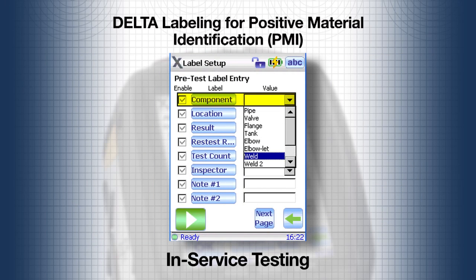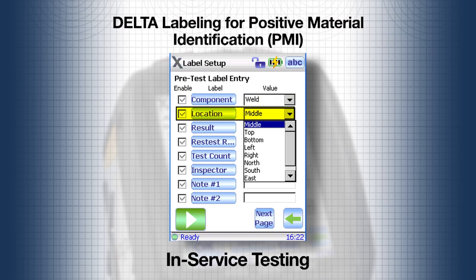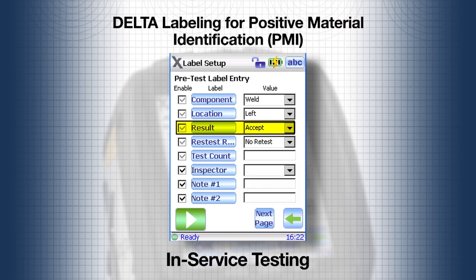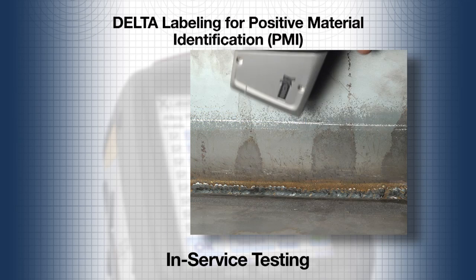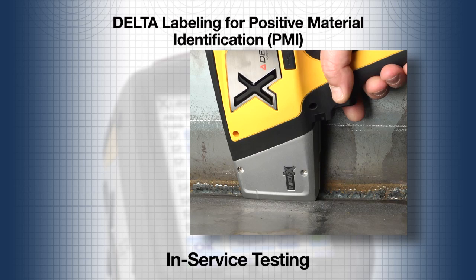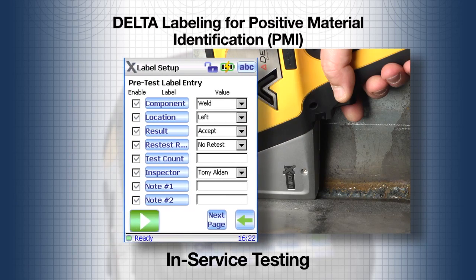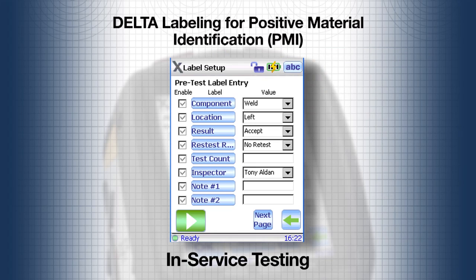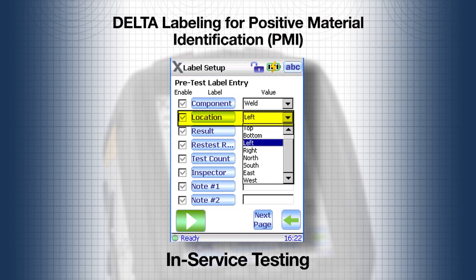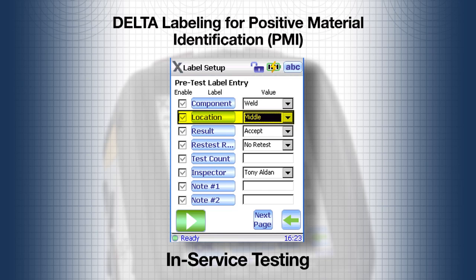Select the component and the location on the component where the first test will be run. The result field defaults to accept, but if the test needs to be rerun, this field can be changed to retest after the test is taken. Place the analyzer on the sample, pull the trigger, and the test begins. For each test, the label window appears before the test starts — it's a simple matter of changing the location of the test and then running the test.